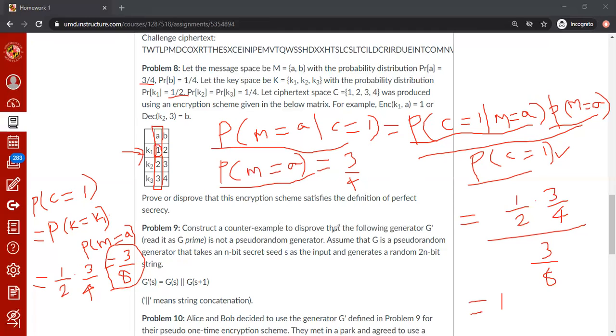Therefore, this cannot be perfect secret. 1 is not equal to 3 fourths. Therefore, this cannot be perfect secret. So we disproved that this scheme is a very poor scheme. That's basically it. Thank you very much for your attention.